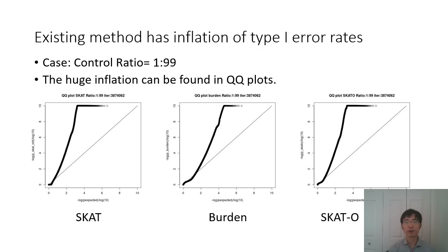When the case-control ratio is unbalanced, for example 1 to 99, we found all existing methods have inflation of type 1 error rates. For example, for unadjusted SKAT, Burden, and SKAT-O, all three methods suffer from huge inflation of type 1 error rates.